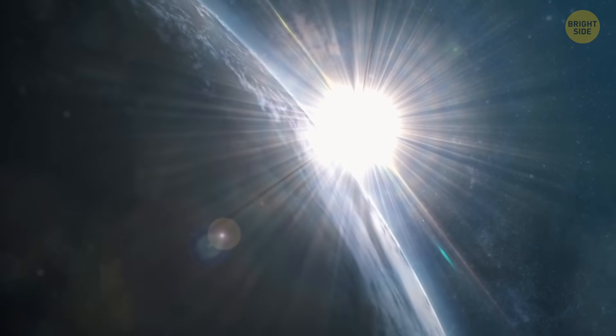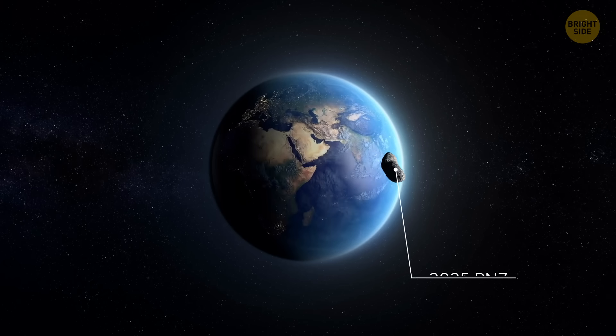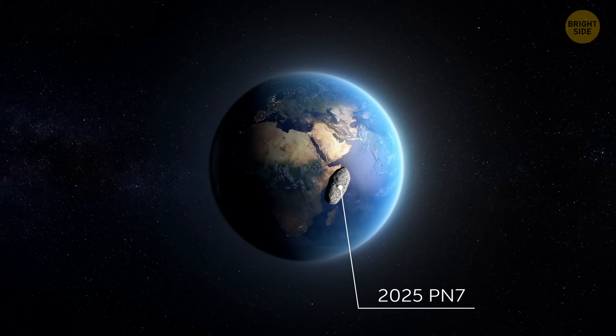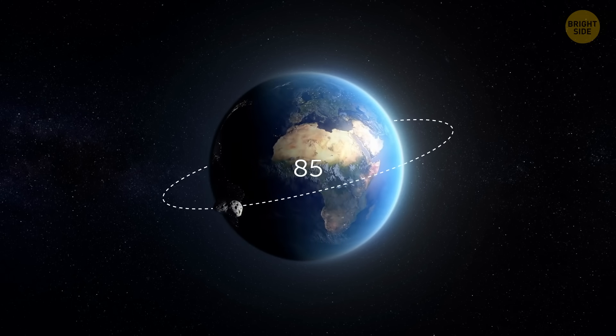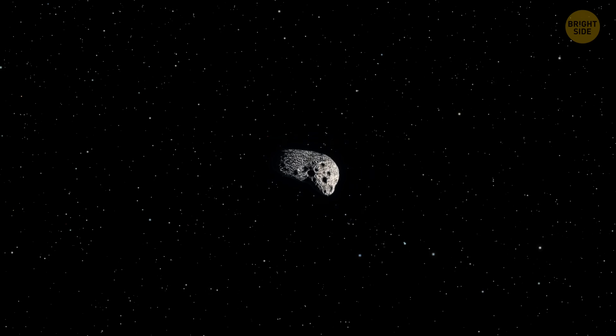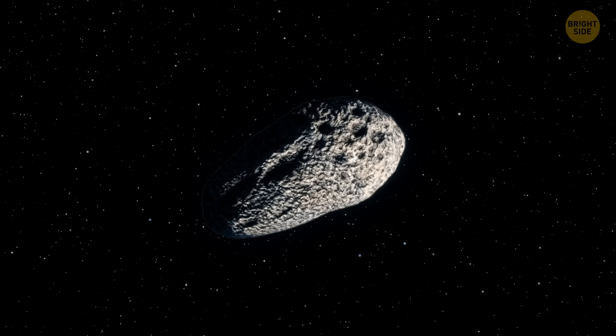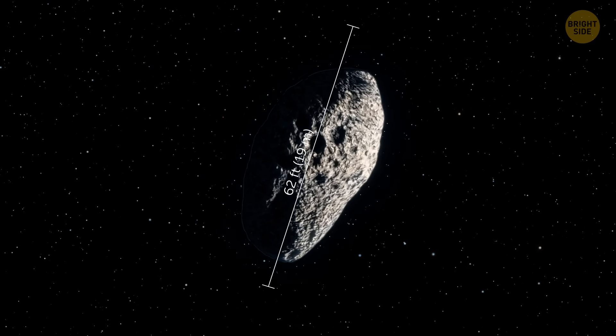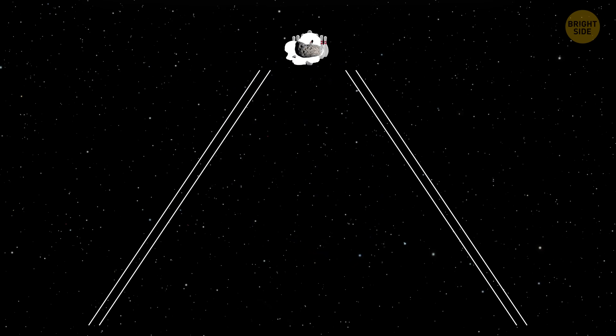But what about the most recently discovered one? The researchers named it 2025 PN7. Like we said, it's already been with us for 60 years and will likely stay for around 68 more. For a long time, it remained undiscovered because of its tiny size, only about 62 feet across, which is about the length of a bowling lane. This also answers the question of whether you could see it yourself if you knew where to look.